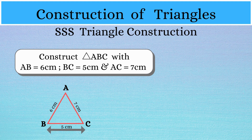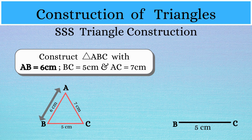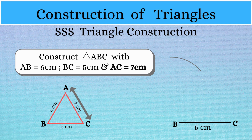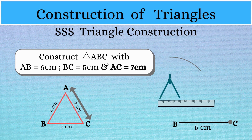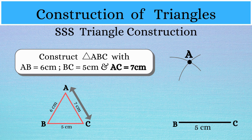Now let's first construct the base of the triangle BC. Draw a line segment of length 5 cm using your ruler and mark it BC. Next, we know that AB is equal to 6 cm, so with B as the center and radius as 6 cm, draw a small arc. Then we also know that AC is equal to 7 cm, so with C as the center and radius as 7 cm, draw another arc such that it intersects the previous arc. This point of intersection is point A.